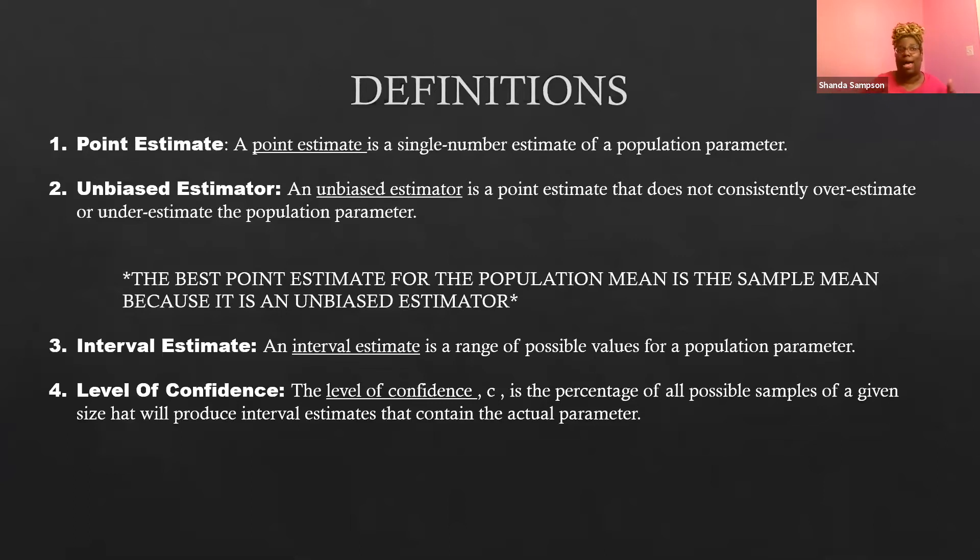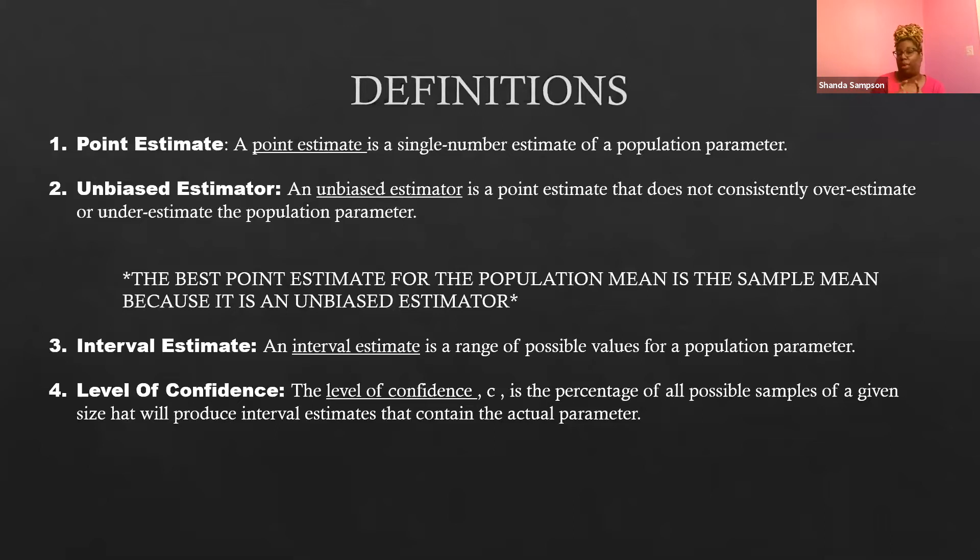So what I need to do is find myself a level of confidence. How confident am I of my information, of my data? So the level of confidence, and we use the notation C, the letter C to indicate the level of confidence, is the percentage of all possible samples of a given size that will produce interval estimates that contain your actual parameter.